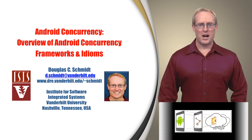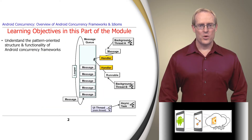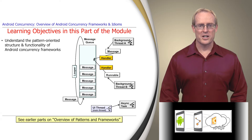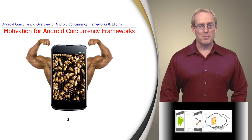Welcome to the first part of the module on Android concurrency frameworks. In this part, we focus on the pattern-oriented structure and functionality of several Android concurrency frameworks, which contain an integrated set of classes that collaborate to provide a reasonable architecture for families of related concurrent applications and services, as covered in earlier videos. There are two primary motivations for Android's concurrency frameworks.